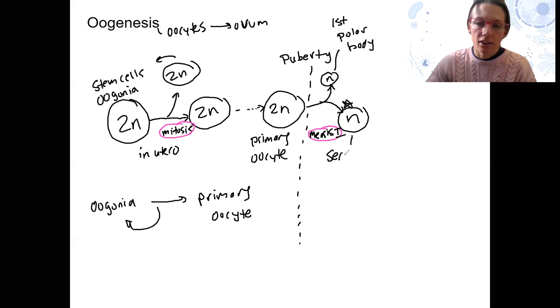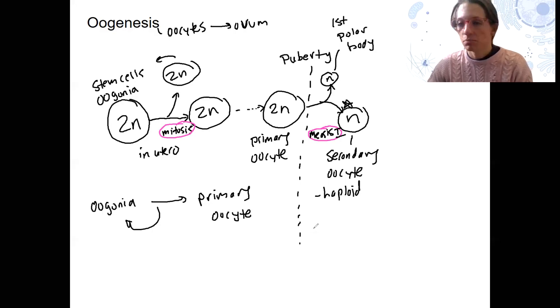This is our secondary oocyte. The secondary oocyte is haploid, and it is the stage at which your eggs are, like, just in general, like until they get fertilized, so from puberty until on.